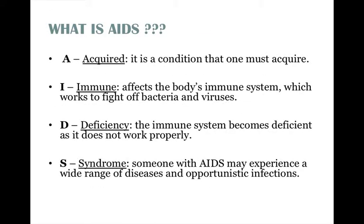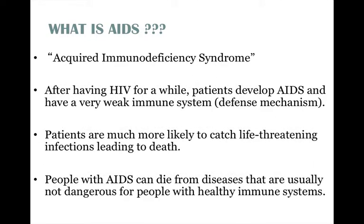What is AIDS? The A stands for acquired — it is a condition that one must acquire. I stands for immune; it affects the body's immune system, which works to fight off bacteria and viruses. D is deficiency — the immune system becomes deficient as it does not work properly. S is for syndrome — someone with AIDS may experience a wide range of diseases and opportunistic infections. So, AIDS stands for acquired immunodeficiency syndrome.